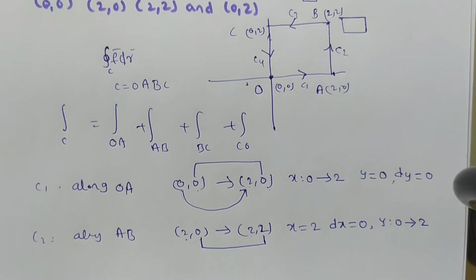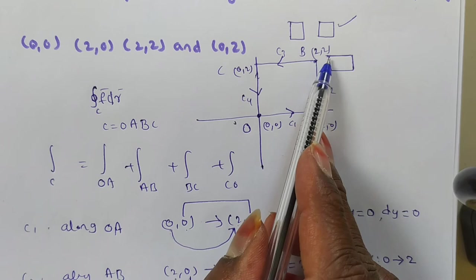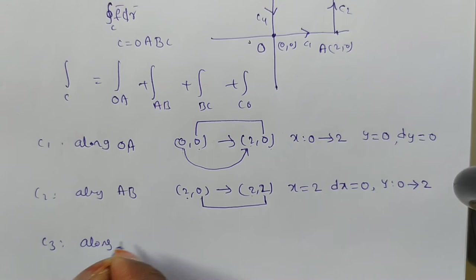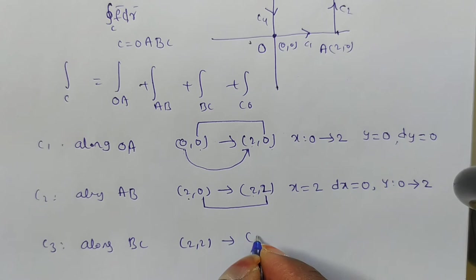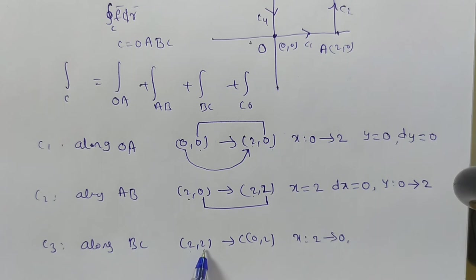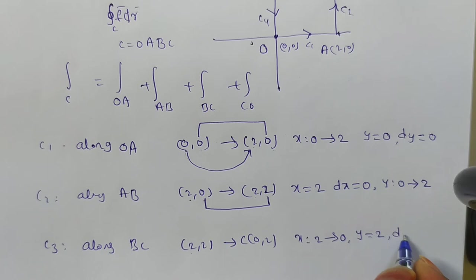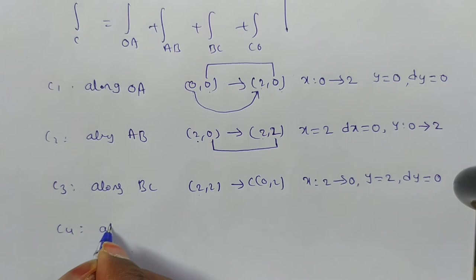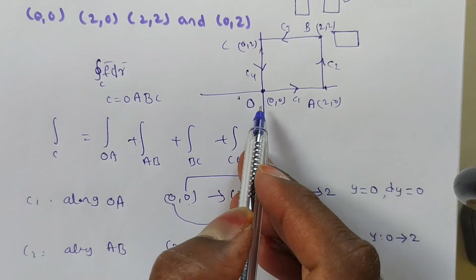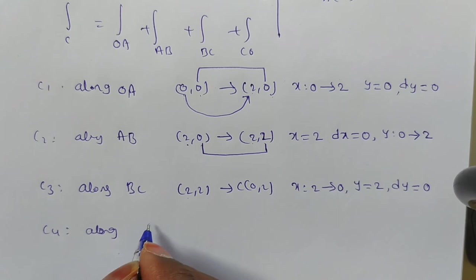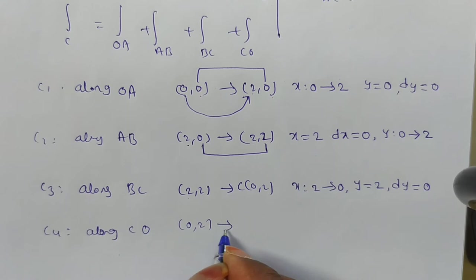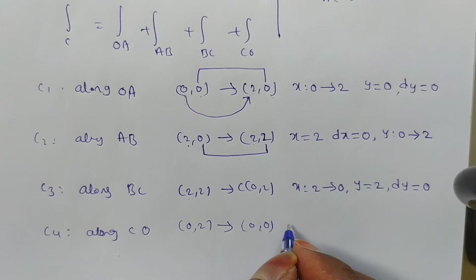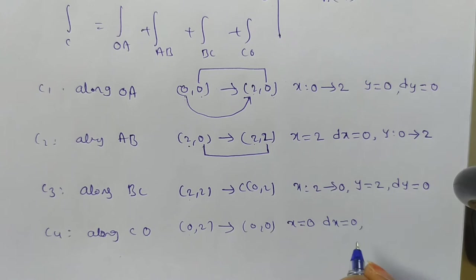Along C3 (B to C), from (2,2) to (0,2): X moves from 2 to 0, and Y = 2 throughout, so DY = 0. Along C4 (C to O), from (0,2) to (0,0): X = 0 throughout so DX = 0, and Y moves from 2 to 0.